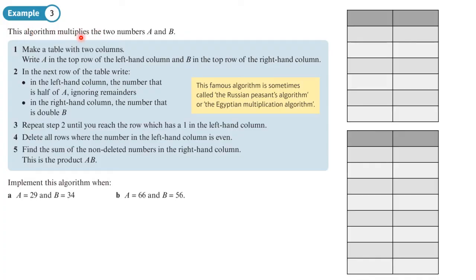Now we have another algorithm that multiplies two numbers a and b. We make a table of two columns with a on the left and b on the right. In the next row, write half of a ignoring any remainder on the left, and double b on the right. Repeat until you reach the row with one in the left column, then delete all rows where the left column is even, and find the sum of the non-deleted right-hand numbers. For part A, a is 29 and b is 34.